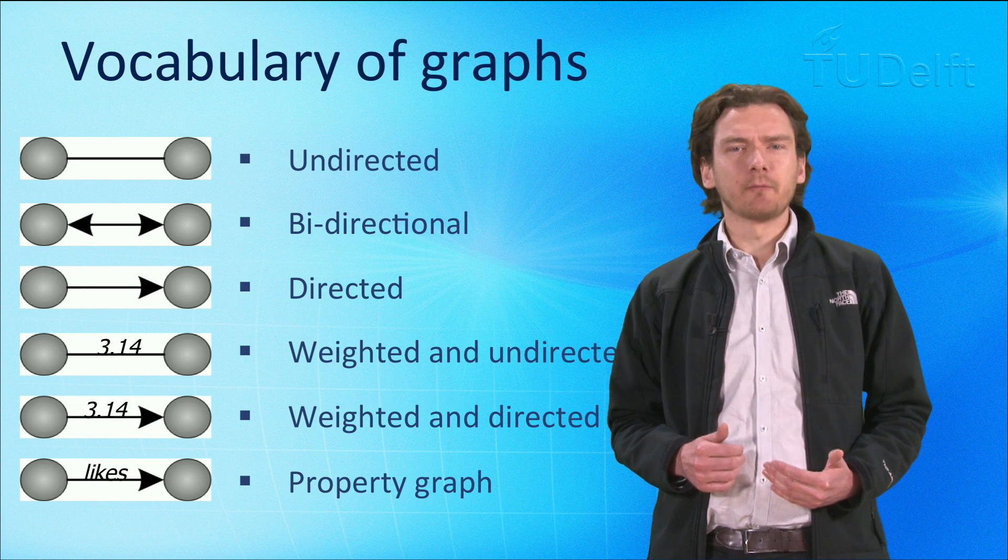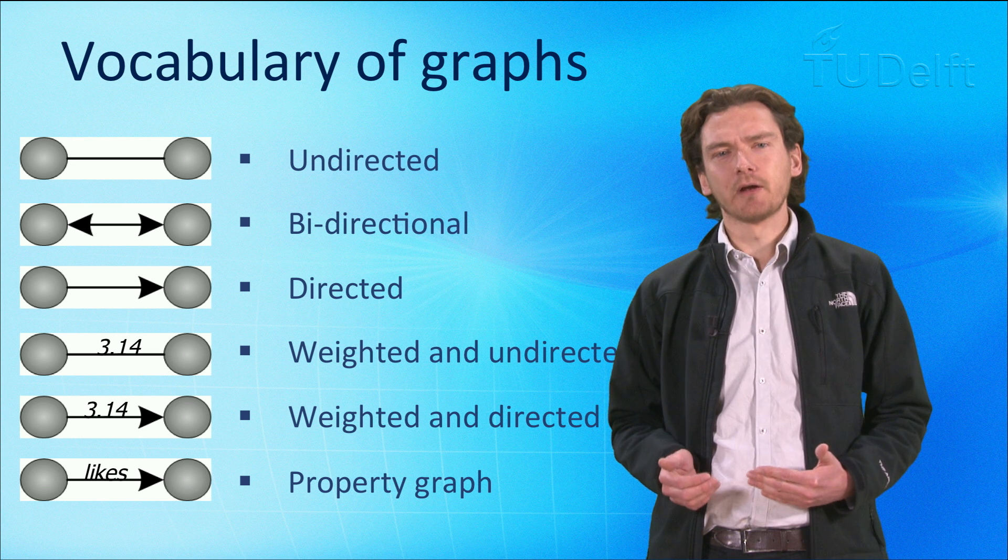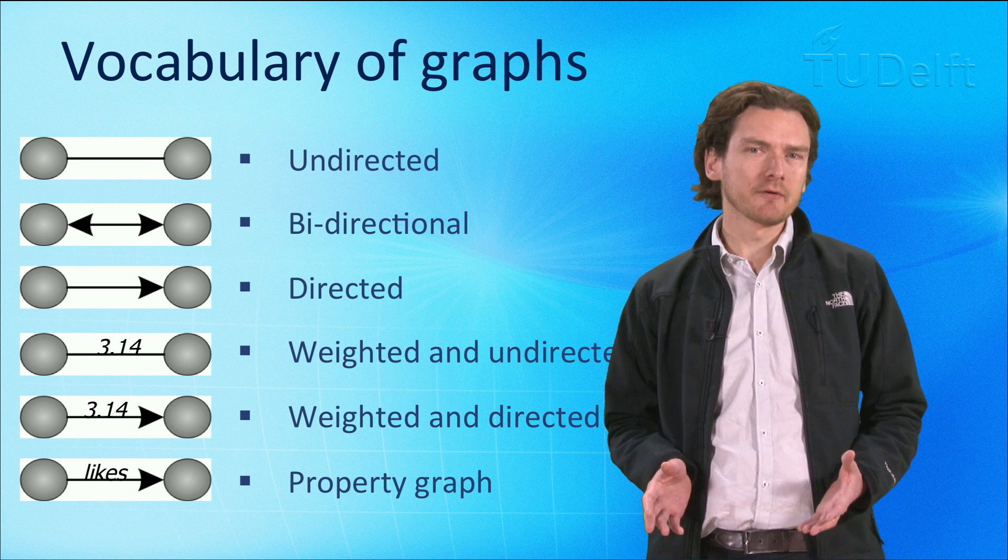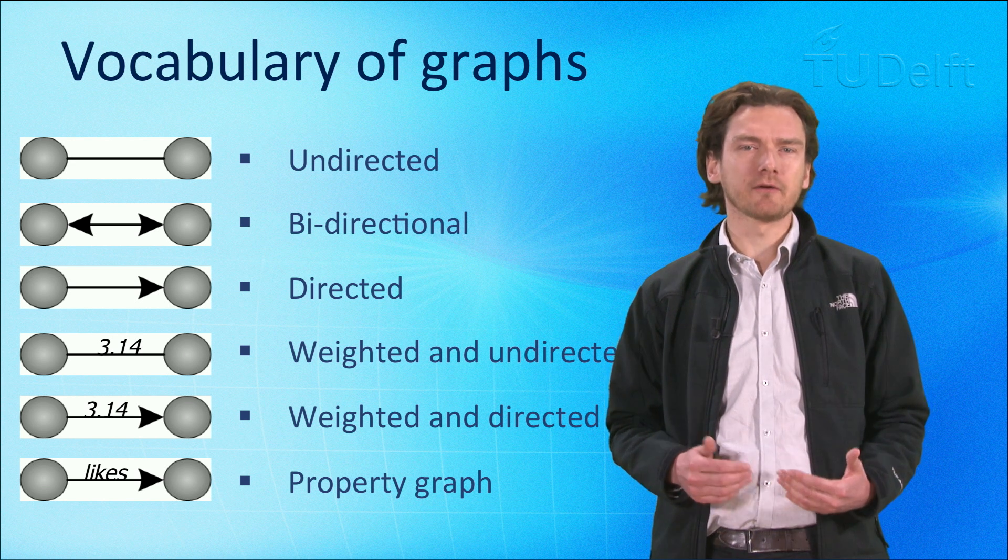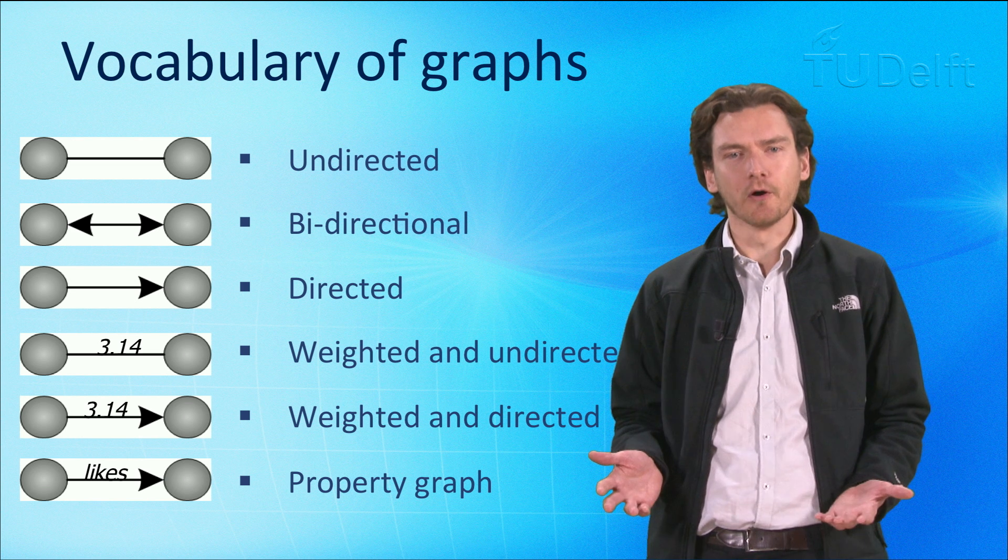There are many different types of graphs that we can define, given the nature of their edges and what they are describing. An undirected graph is composed of edges that simply connect nodes. In other words, they're just a connection, and that's all we know.